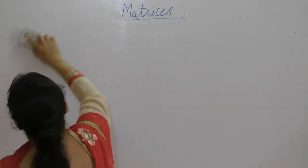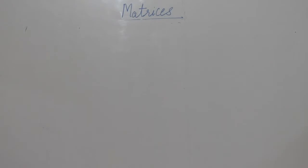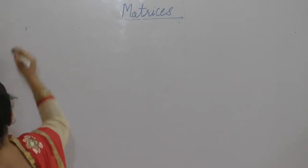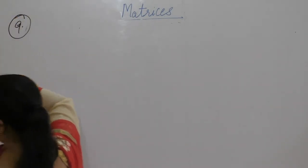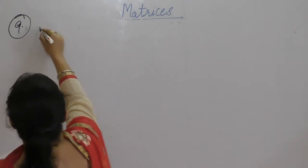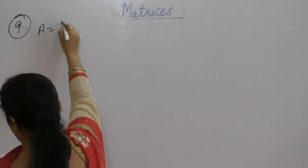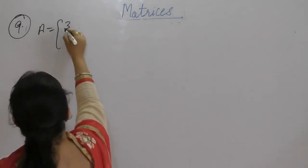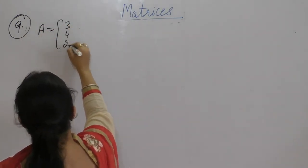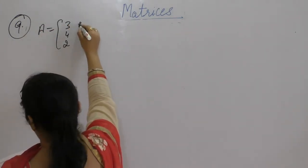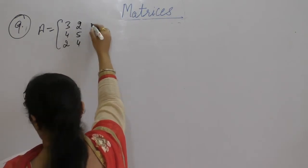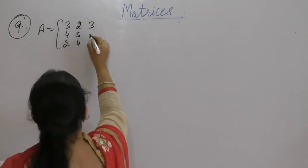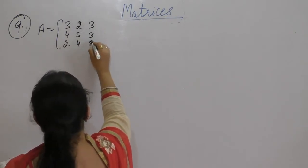Question number 9: Express the matrix A, where A is the 3x3 matrix with entries 3, 4, 2 in the first row; 2, 5, 4 in the second row; and 3, 3, 5 in the third row.